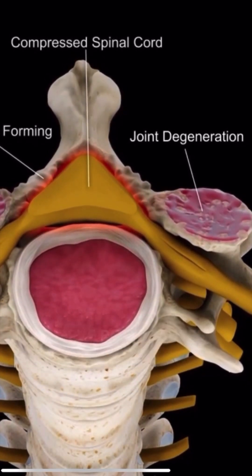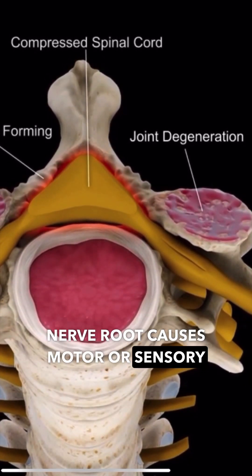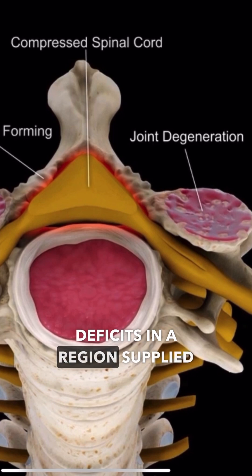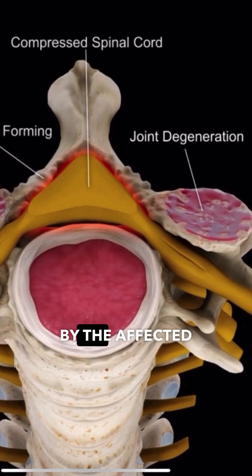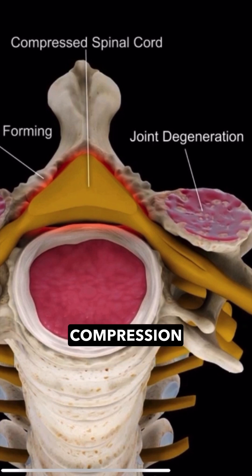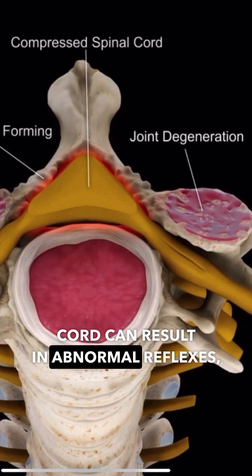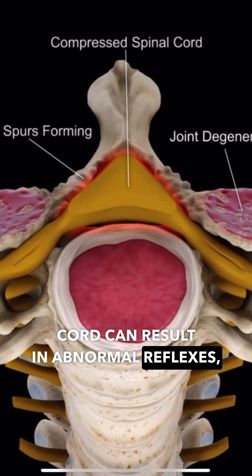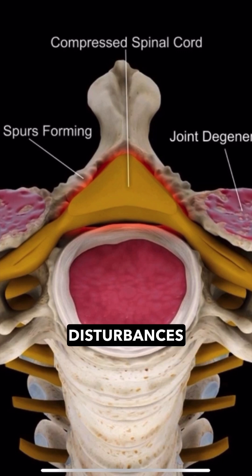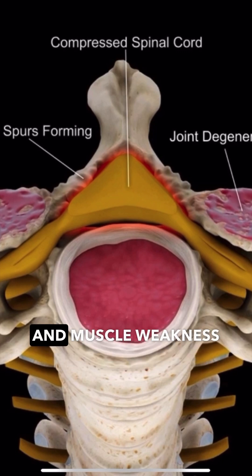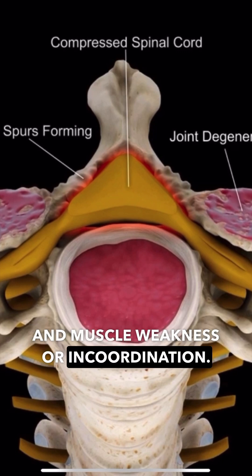Compression of a cervical nerve root causes motor or sensory deficits in a region supplied by the affected nerve. Compression of the spinal cord can result in abnormal reflexes, disturbances of balance, and muscle weakness or incoordination.